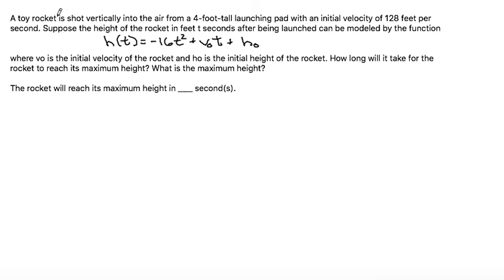This problem says a toy rocket is shot vertically into the air from a 4-foot tall launching pad with an initial velocity of 128 feet per second.